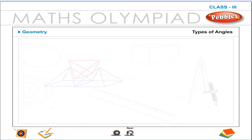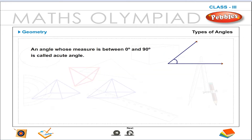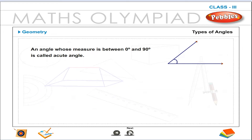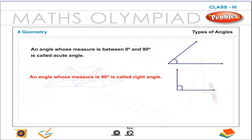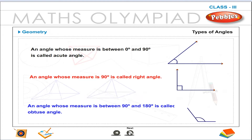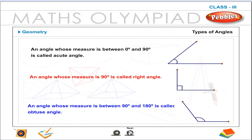Types of angles. An angle whose measure is between 0 degrees and 90 degrees is called an acute angle. An angle whose measure is 90 degrees is called a right angle. An angle whose measure is between 90 degrees and 180 degrees is called an obtuse angle.